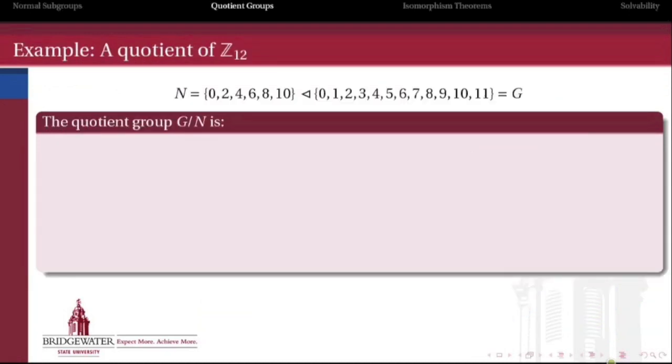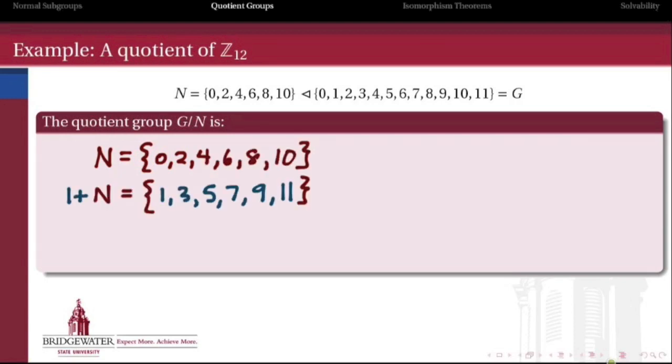Here's some more examples. Going back to Z mod 12 again and taking this time the normal subgroup that has 6 elements: 0, 2, 4, 6, 8, and 10. What are the cosets? Well, there's really only one that's not N itself, and that's 1, 3, 5, 7, 9, and 11, which is 1+N.